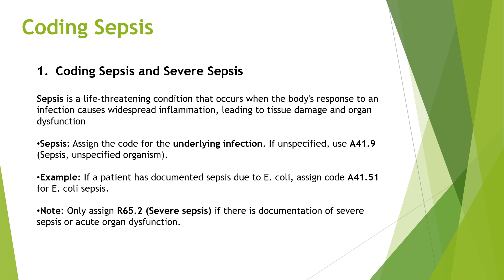If the provider mentions whatever organism has been found, the particular organism code will also be assigned with the sepsis. For example, if the patient has documented sepsis due to E. coli, assign code A41.51, which is for E. coli sepsis. Note: only assign R65.2 (severe sepsis) if there is documentation of severe sepsis or acute organ dysfunction. When coding for severe sepsis, we always have to look for that documentation.